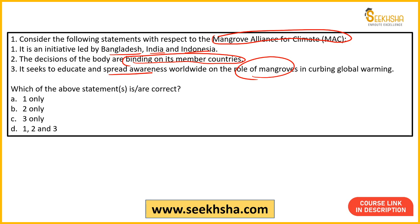How mangroves can be important for global warming — I will tell you which statement is correct. The Mangrove Alliance for Climate is a voluntary organization and its decisions are not binding. So the second statement is incorrect, meaning options B and D will not be the answer. The initiative led by Bangladesh, India and Indonesia — and the education and awareness point — that is right, you should know, you cannot eliminate it.